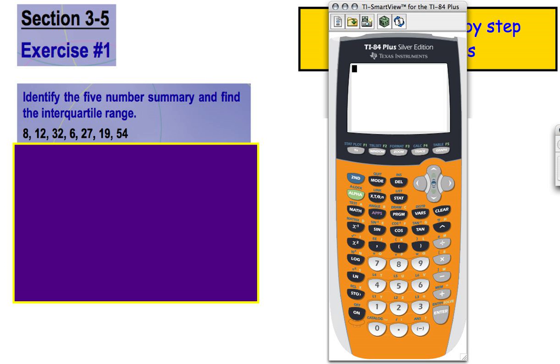So to put our numbers into our graphing calculator, we go to the stat button. The stat button is located in the middle of the keyboard. You press that stat button, it takes you to a screen that looks something like this. To edit your list, we're going to press enter or choose number one, edit.